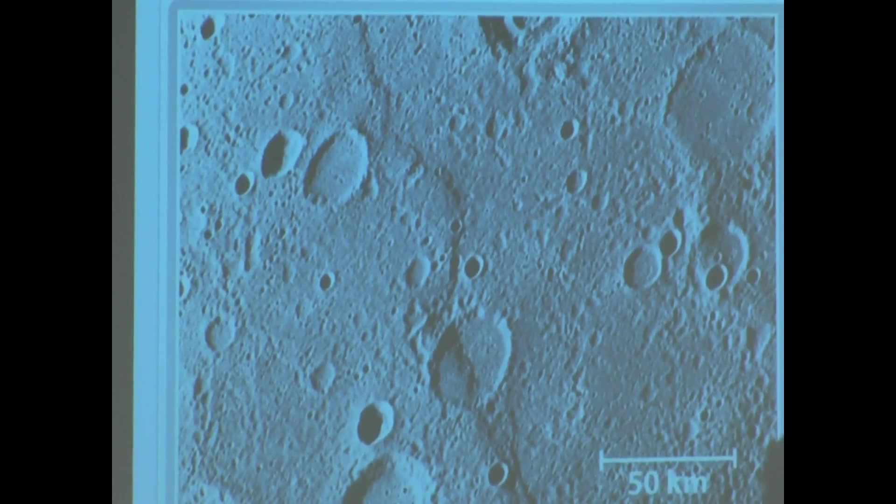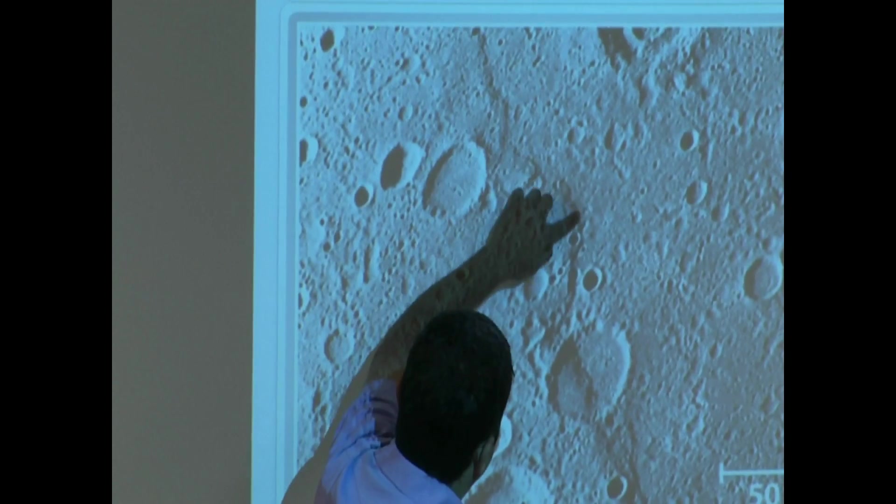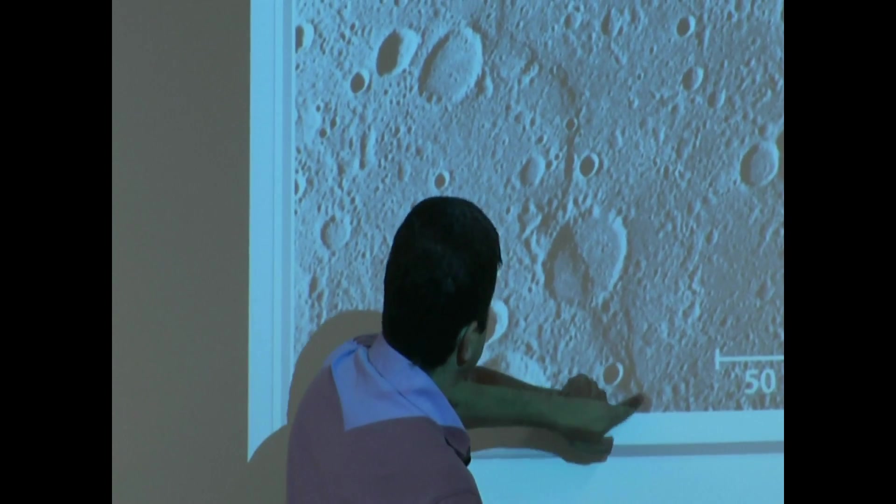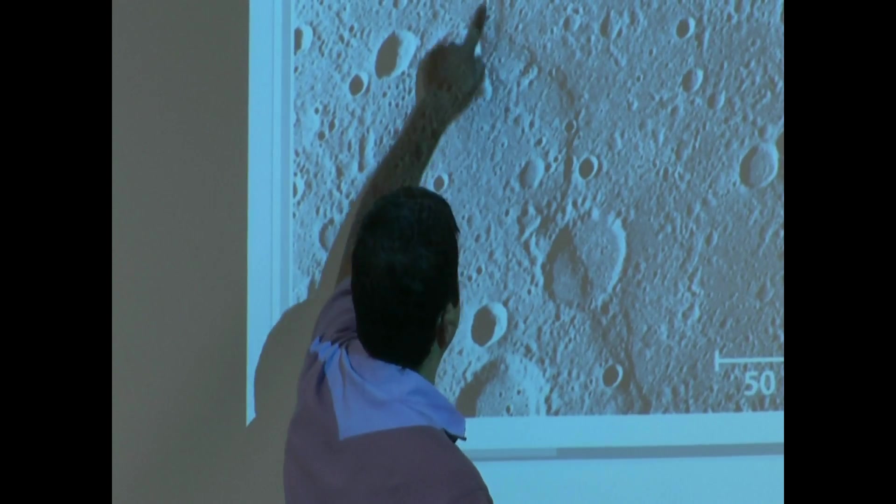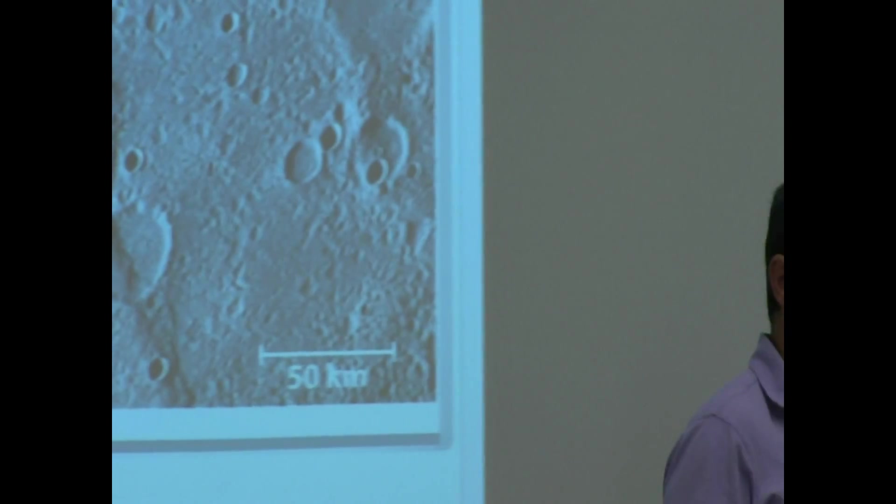These are the lobate scarps you see here. This is the lobate scarps I was talking about - it goes through the crater and cracks all the way through. Our Moon does not have that feature.